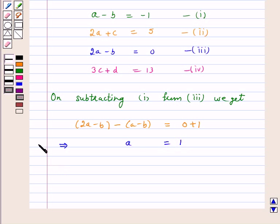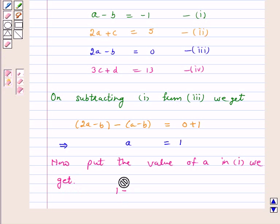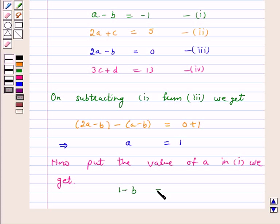Now, put the value of A in equation 1. We get 1 minus B equals negative 1, which implies B equals 2.